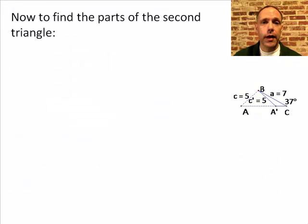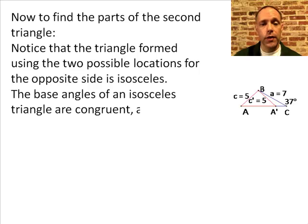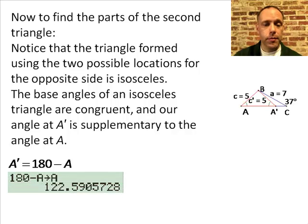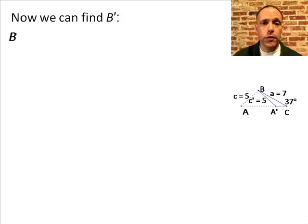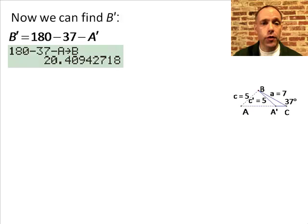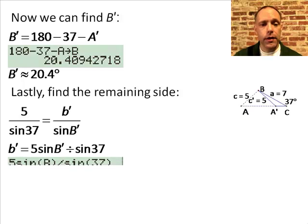Solving for the second possible triangle, we find its parts in the same order as the first triangle. We found angle A first, so we find angle A prime first. Remember the isosceles triangle — angle A prime is supplementary to angle A. Angle A prime is about 122.6 degrees — store that in your calculator's memory. Next, find angle B prime: the three angles add up to 180, so angle B prime is about 20.4 degrees — store this in memory. Set up the proportion using the law of sines and solve for side b prime. Side b prime is about 2.9.